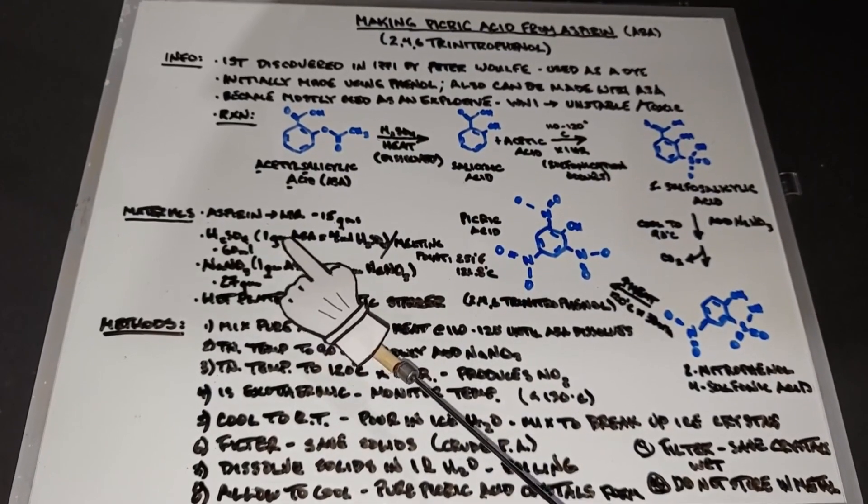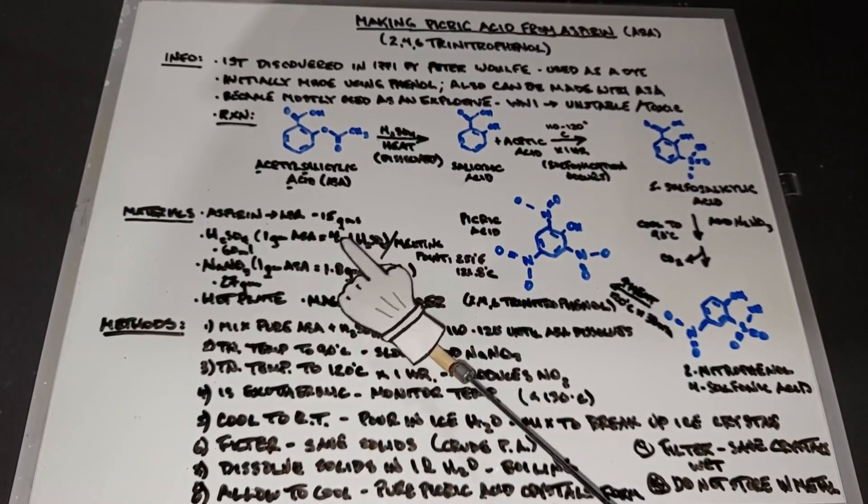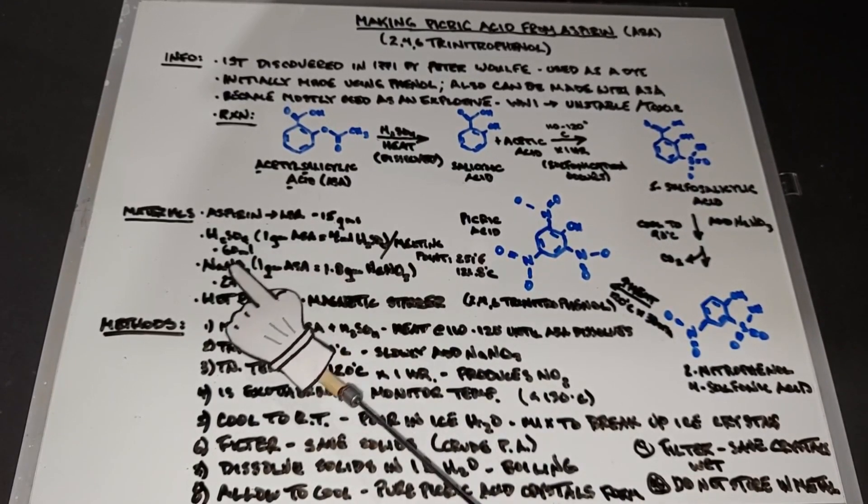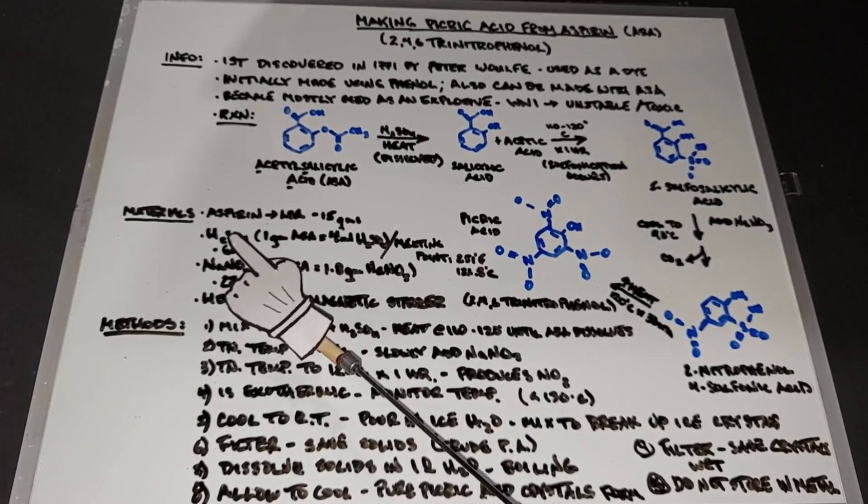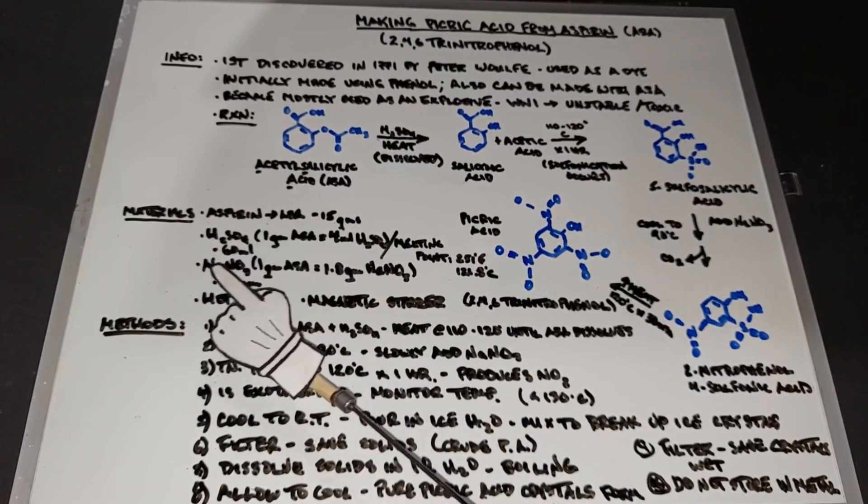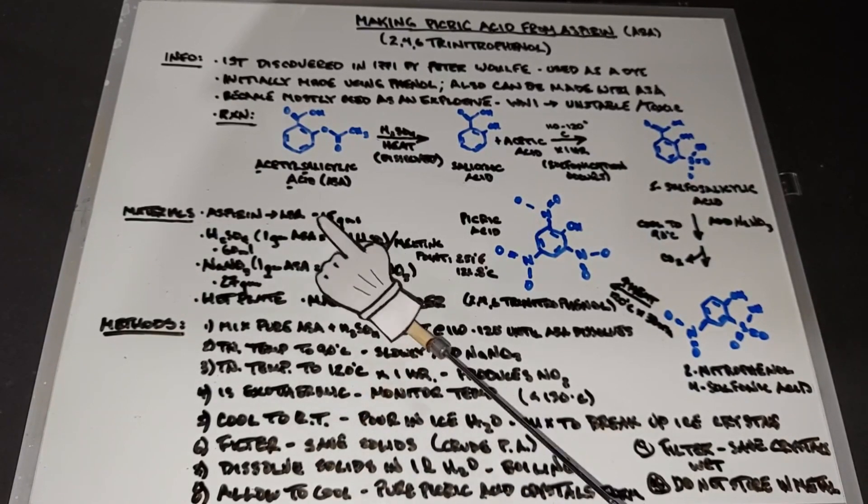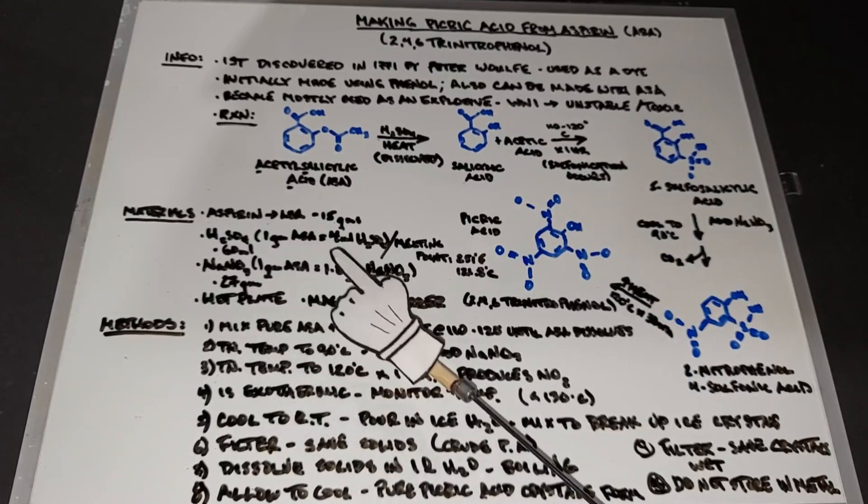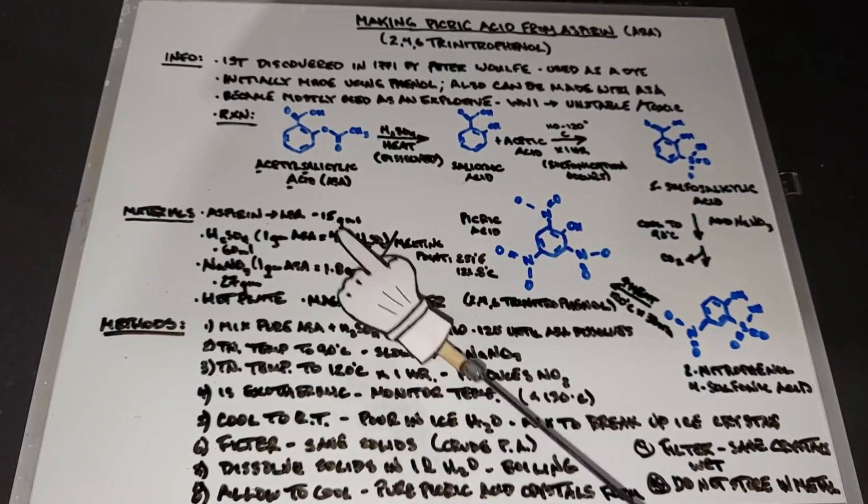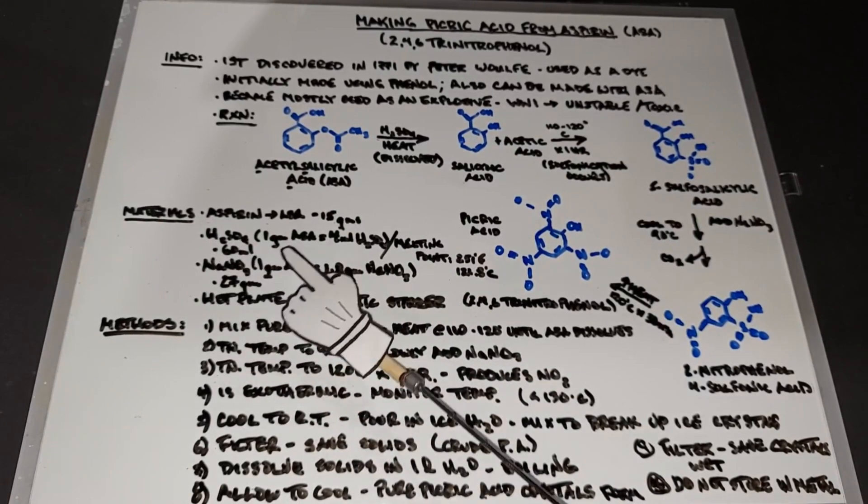We're also going to need sulfuric acid. I know from one gram you need four milliliters of sulfuric acid, so we have 15 grams. 15 times 4 is 60, so we need 60 milliliters of 95% or higher sulfuric acid. We also need sodium nitrate. Every gram of acetylsalicylic acid requires 1.8 grams of sodium nitrate. So we multiply 1.8 times 15, and we end up with 27 grams of sodium nitrate.